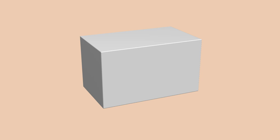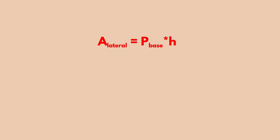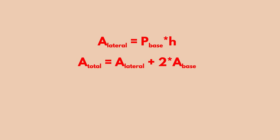The formulas for the lateral area, total area, and volume used in the case of the right prism are available in the case of the rectangular parallelopiped as well. Let's remember: where H is the height of the prism, P_base is the base perimeter of the prism, and A_base is the area of the base.